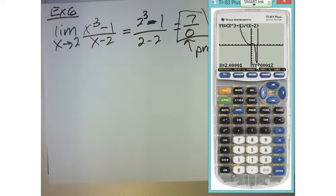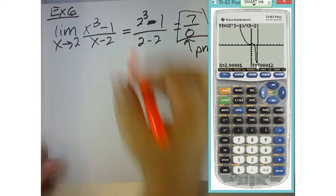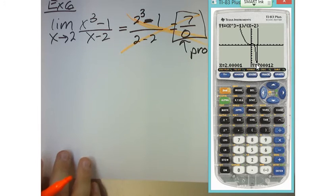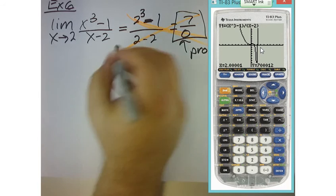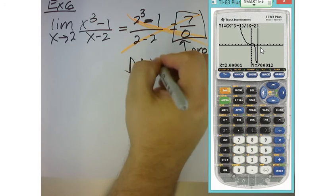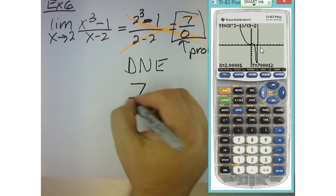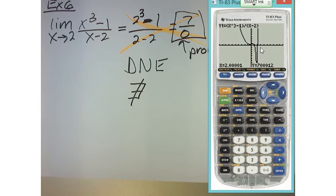So, what we would say is, now, it has nothing to do with this. Although, that is an indicator that you're going to have a problem. What it has everything to do with is what it actually approaches. So, what we would do is you would just say does not exist. D-N-E is how Mr. Adams likes to write it. Another way you could write it is does not exist this way. A backwards E with a slash through it.